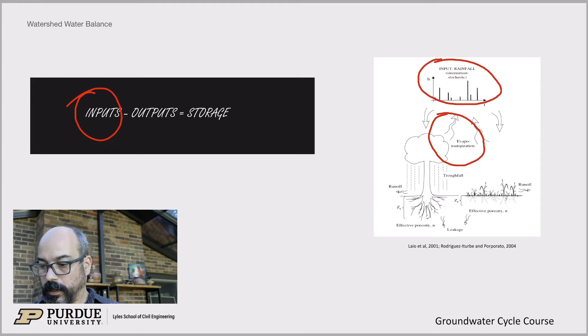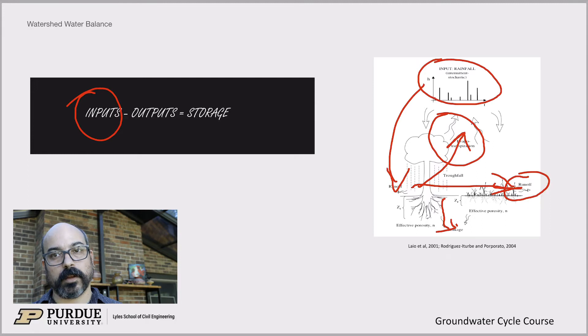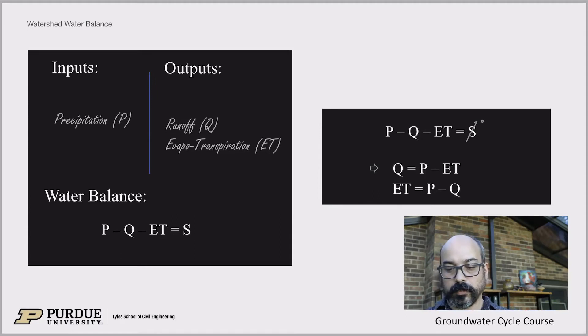And then the outputs are, so we've seen before, evapotranspiration is a big one. So remember the Africa satellite view, where you can see the forests kind of transpire. This is exactly what that is. So evapotranspiration is a big one. And then runoff, here is the other one. So essentially the water that comes down as rain goes back out as evapotranspiration or runoff.